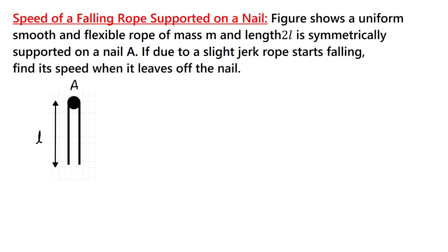Hello friends. This problem is about the speed of a falling rope supported on a nail. The problem says: a figure shows a uniform smooth flexible rope of mass M and length 2L which is symmetrically supported on a nail A. If due to a slight jerk the rope starts falling, find its speed when it lifts off the nail.